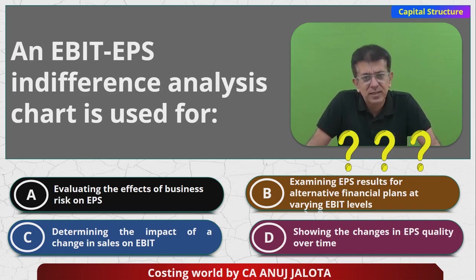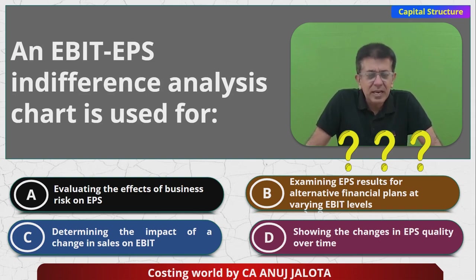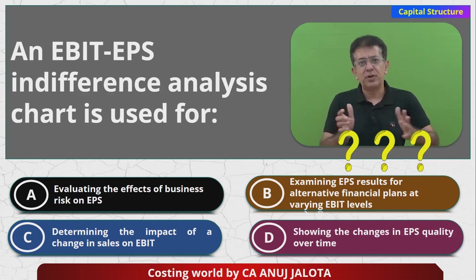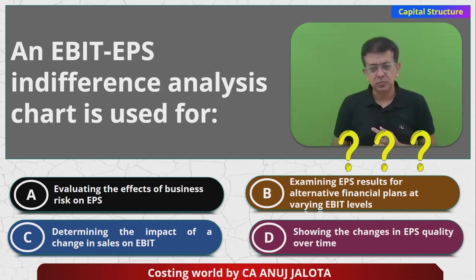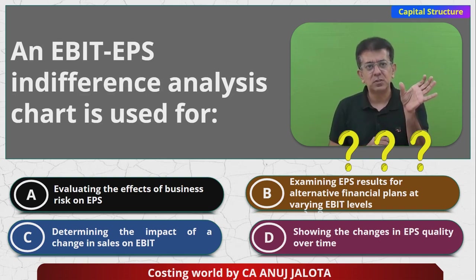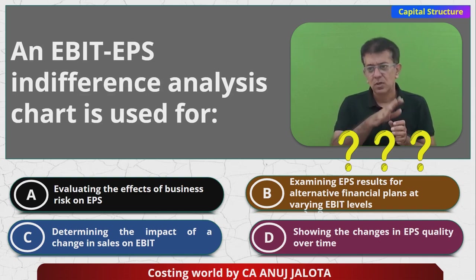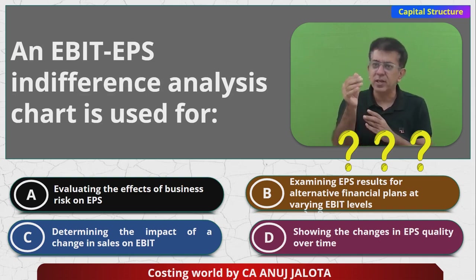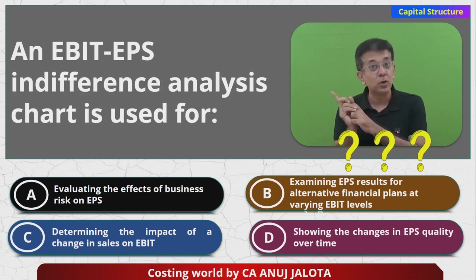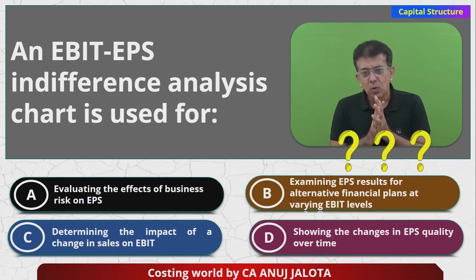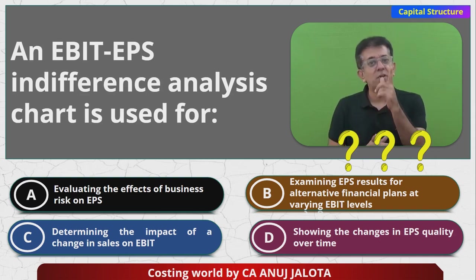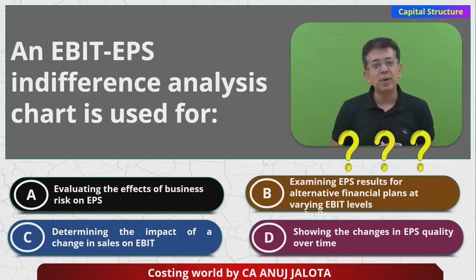To explain this, let me first clarify what EBIT-EPS indifference analysis means. The indifference point is that level of EBIT at which EPS is the same under two plans. Suppose you wish to raise 100 crore rupees — Plan One: 80 crores by equity and 20 crores by debt. Plan Two: 20 crores by equity and 80 crores by debt. Plan Two is more risky because there is more debt. Between both plans, there will be an indifference point where EPS is the same.